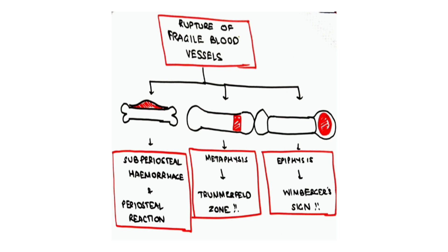Collagen is also present in blood vessels, so in scurvy there are fragile blood vessels in the periosteum, leading to subperiosteal hemorrhage — which is the periosteal reaction. In the metaphysis, blood vessel rupture causes blood accumulation, leading to increased lucency — the Trümmerfeld zone. In the epiphysis, blood vessel rupture in the center leads to central lucency, so the epiphysis appears like a ring — the Wimberger ring sign.